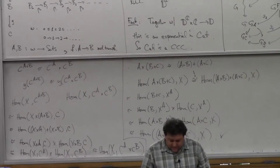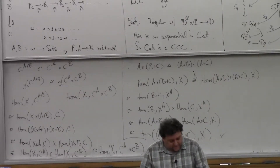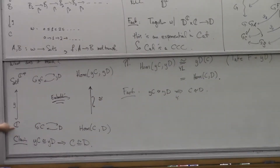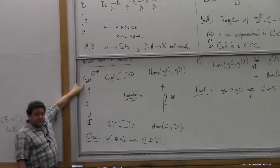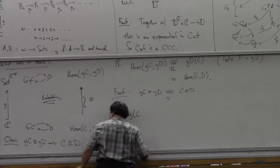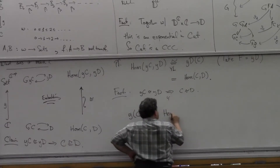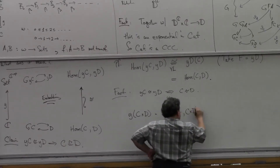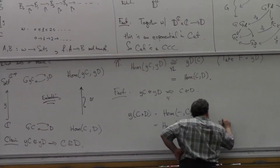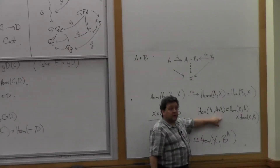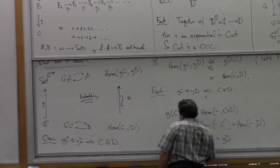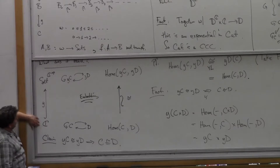There's something else I wanted to say — I'll just mention it and say it next time. It's good to know that the Yoneda embedding has some properties: if the category C is known to have some structure you're interested in, it's good to know the Yoneda embedding preserves it. For example, if C has finite products, then the Yoneda embedding of C cross D is HOM blank C cross D, which we just checked equals HOM blank C cross HOM blank D — the products pull out on the right. So the Yoneda embedding itself preserves products.